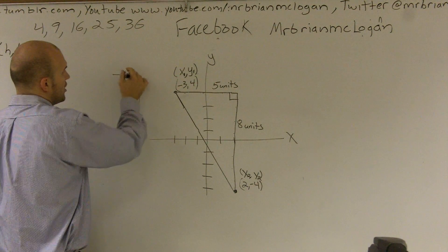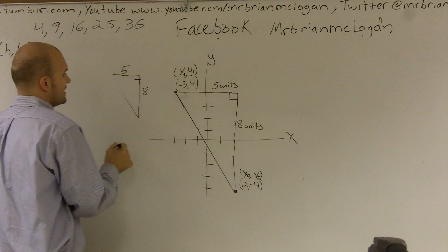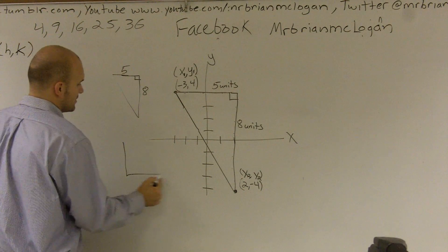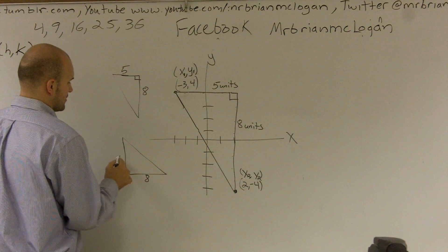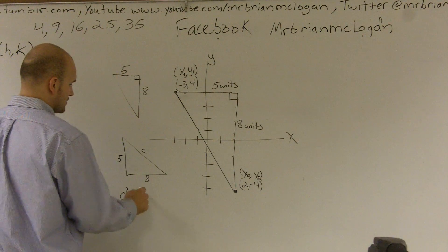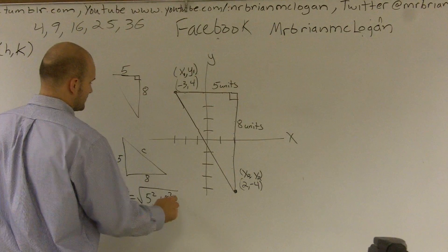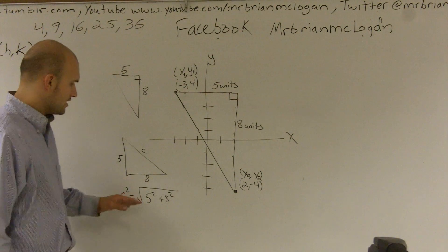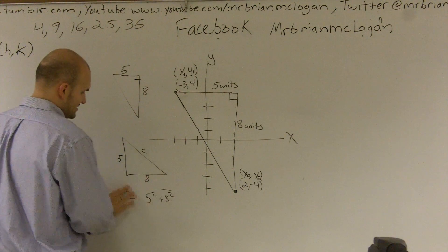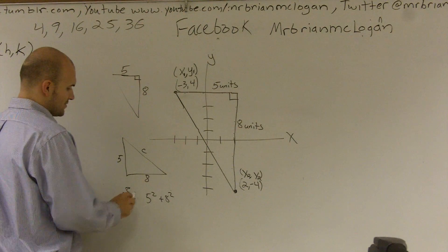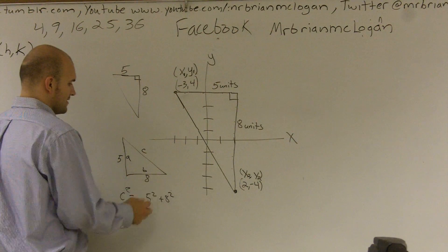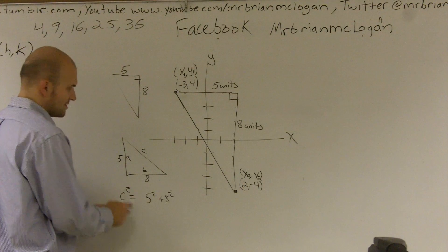And for those of you that have been involved with geometry, what you can see is, now what I've done, whenever you have a right angle, you can always use the Pythagorean theorem to help you derive what the hypotenuse is going to be. So therefore, I can say c squared equals the square root of five squared plus eight squared. But a squared plus b squared equals c squared, right? So let's call this a and this b. a squared plus b squared equals c squared. I'm just going to leave this right here for a second.